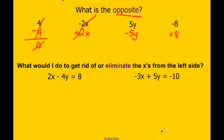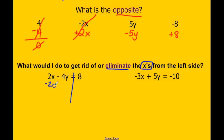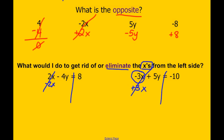Down below, we have some equations. What would I do to get rid of or eliminate the x's from the left side of the equation? If I wanted to get rid of 2x, I would subtract 2x in order for those to eliminate. Over here, I would do the opposite of subtracting, which would be adding 3x, and those would eliminate.